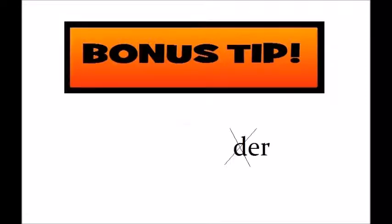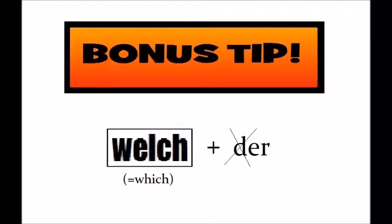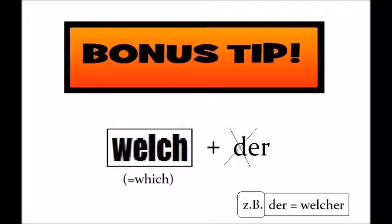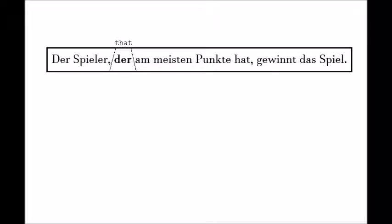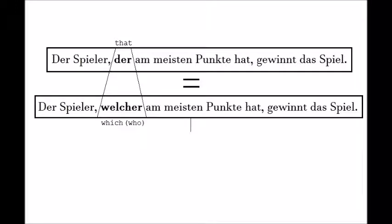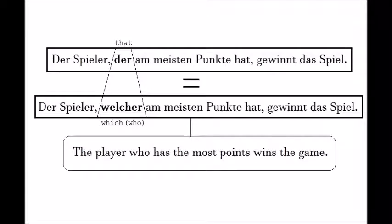Bonus tip! There is an alternative relative pronoun, just like in English where you have 'that' and 'which.' This alternative pronoun has the same meaning but is rarely used — you might see it in written, formal language. It is very easy to learn: just replace the 'D' of the definite article with 'welch' and you have it. There is no such alternative form for the genitive case, though. For example, these two sentences mean the same thing: 'Der Spieler, der am meisten Punkte hat, gewinnt das Spiel.' — 'Der Spieler, welcher am meisten Punkte hat, gewinnt das Spiel.' — 'The player, who has the most points, wins the game.'